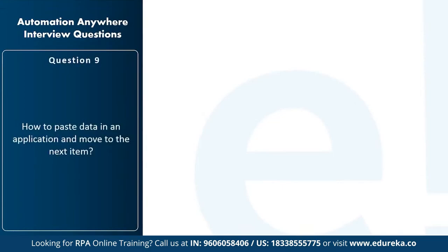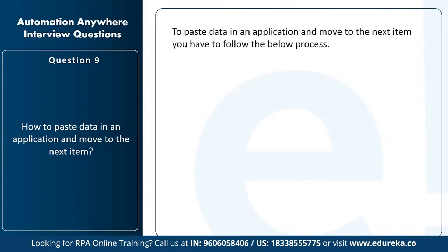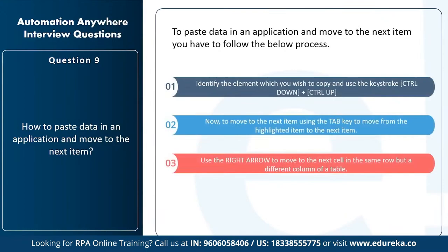Next question: how to paste data in an application and move to the next item? First, identify the element to copy and use the keystroke Ctrl+Down + Ctrl+End. Then use the Tab key to move from the highlighted item to the next item. Use the Right Arrow to move to the next cell in the same row but a different column of a table. Note: some applications also support using the Spacebar to move to the next control or button.